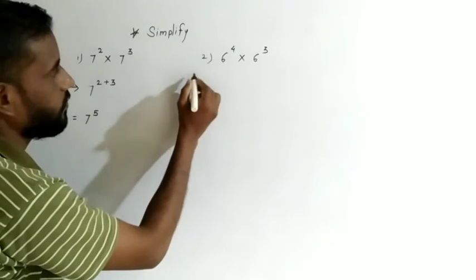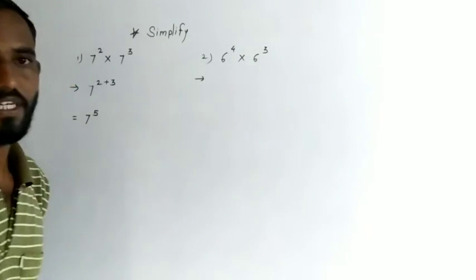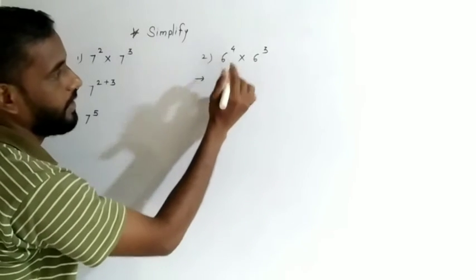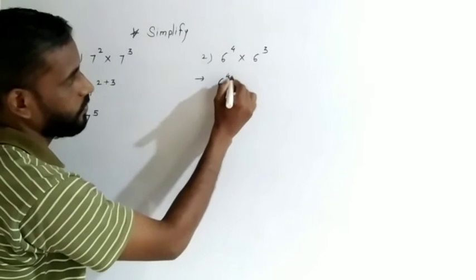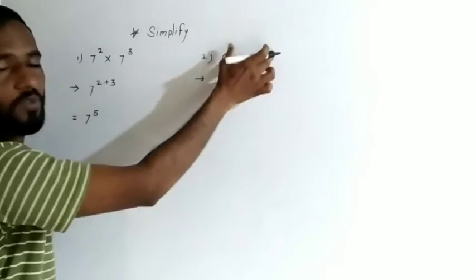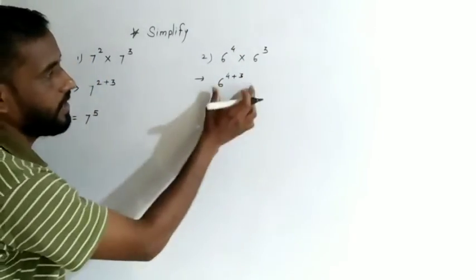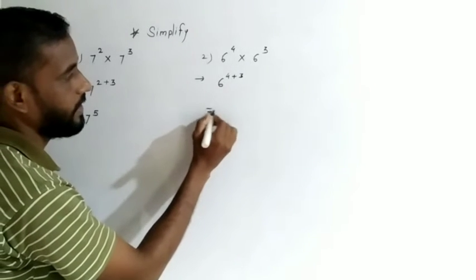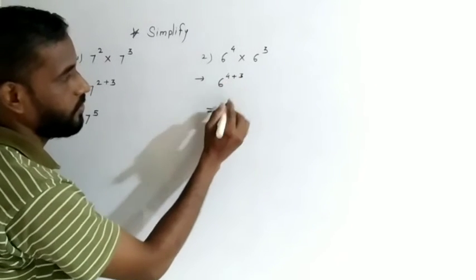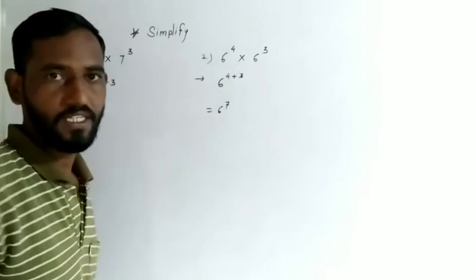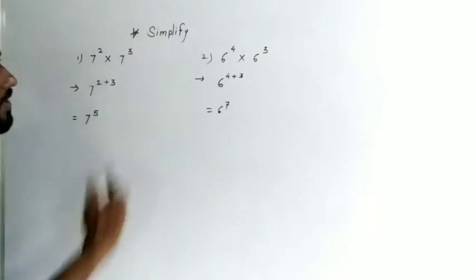Second problem: 6 raised to the power 4 into 6 raised to the power 3. When the base is same, we add the powers. 6 raised to the power 7, because 4 plus 3 equals 7.